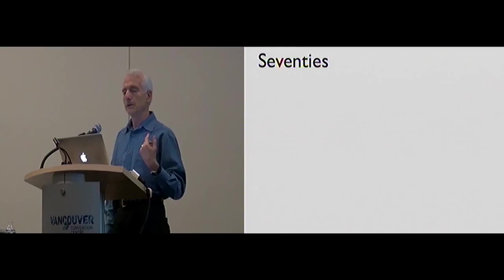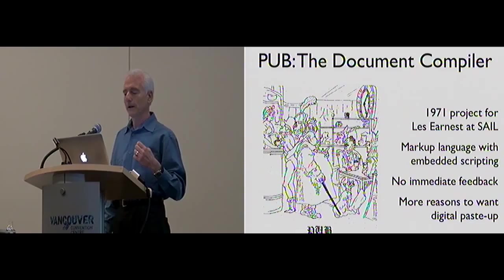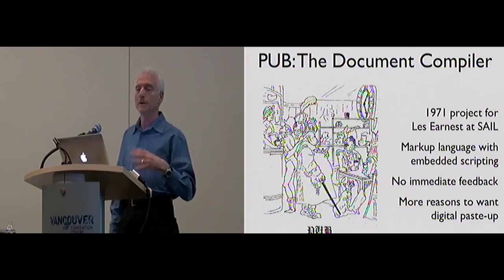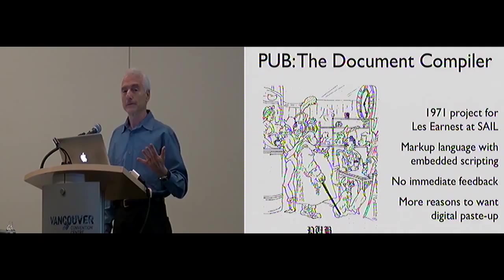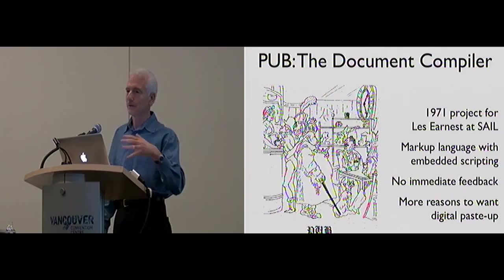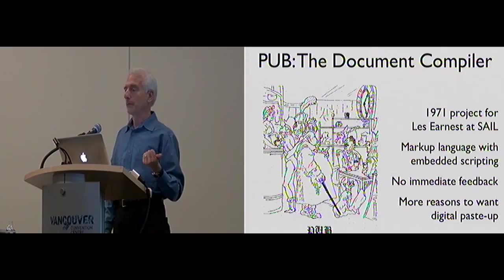He knew I was interested in publishing. He said, I'd like you to do a document compiler. I asked, what's a document compiler? It was some kind of programming language that operated on strings and had a library that allowed you to number pages and sections, generate tables of contents, index, cross-references, and all that. I said, well, that should be interactive — would you let me do an interactive version? He said that's more futuristic, I'd like you to do a batch version. So I ended up implementing what we would now call a markup language with embedded tags and scripting. It was called PUB.